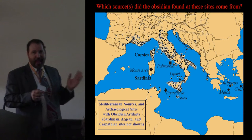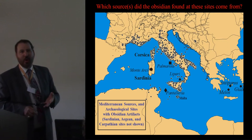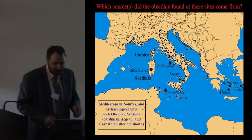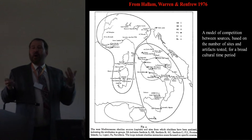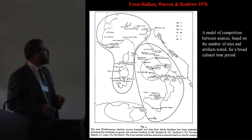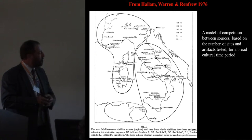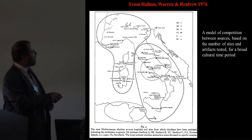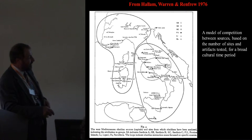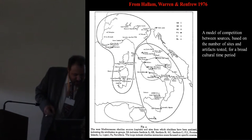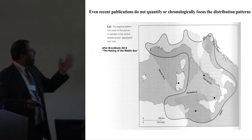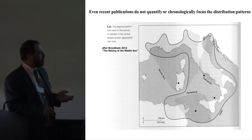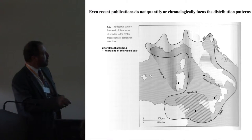Obsidian artifacts have been found at thousands of archaeological sites — far more archaeological work done in Spain and France, less so but definitely in Tunisia and Algeria, Malta and so forth. Because there are so many different sources, we want to know what particular trade routes were established. This map from 1976, now 40 years ago, showed a variety of sites in Sardinia and Italy but very little in Sicily. A recent publication just from a few years ago doesn't really change much about our understanding of the distribution from these different sources.